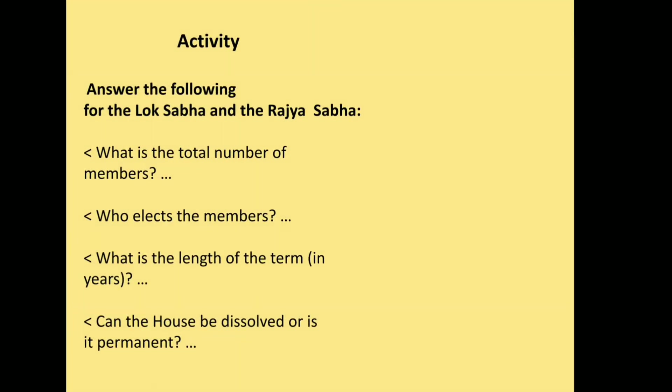Now let us do an activity to understand the differences between Lok Sabha and Rajya Sabha. Answer these questions: What is the total number of members in Lok Sabha and Rajya Sabha? Who elects the members? What is the length of the term in years? And can the house be dissolved or is it permanent? For Lok Sabha, the lower house, representatives are elected directly for 5 years. The total number of members is 545 and the tenure is for 5 years.